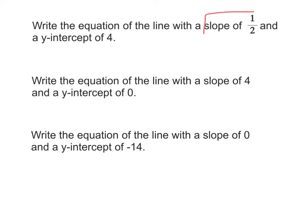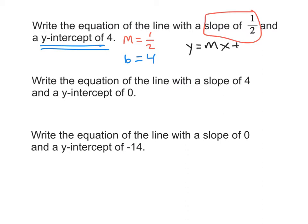I have a slope of 1 half, so I'll write m equals 1 half, and then I have a y-intercept of 4, so b equals 4. If you write down your key information, writing the equation is not very difficult. So y equals mx plus b — m is our slope and b is our y-intercept — gives us y equals 1 half x plus 4.